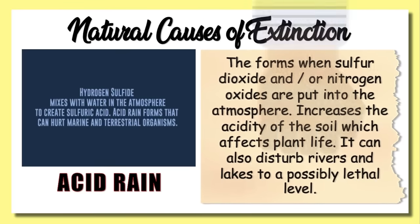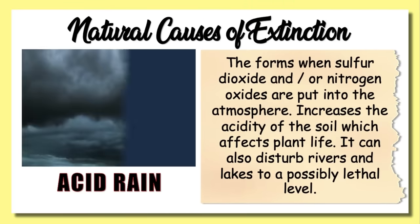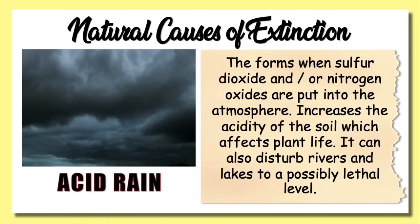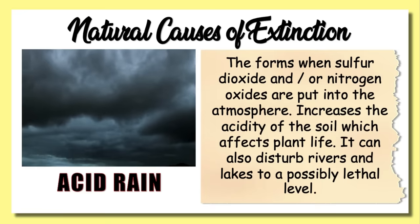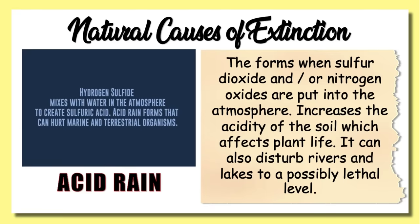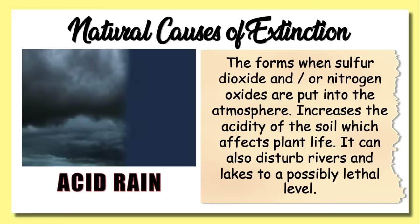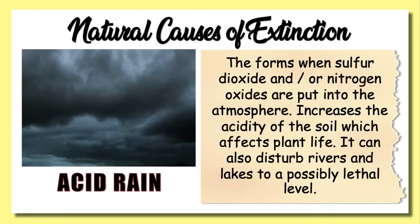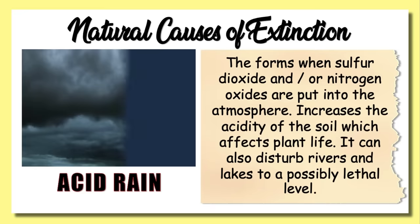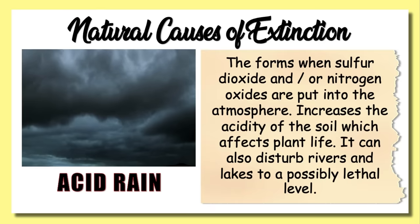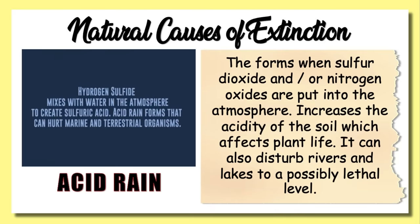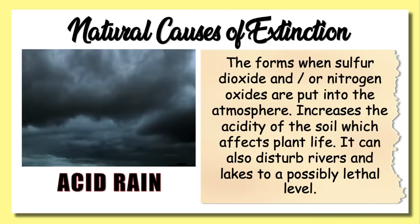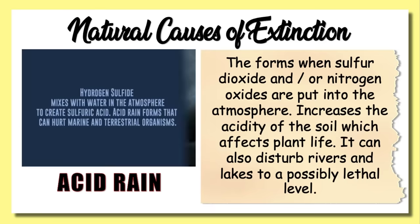Next, acid rain forms when sulfur dioxide and/or nitrogen oxides are released into the atmosphere. These chemicals get absorbed by water droplets in clouds and eventually fall to Earth as acid precipitation. Acid rain increases the acidity of the soil, which affects plant life. It can also disturb rivers and lakes to a possibly lethal level.